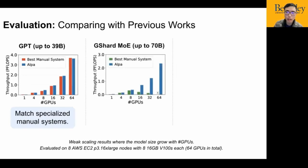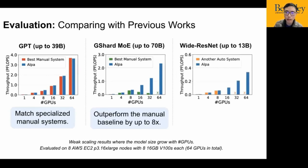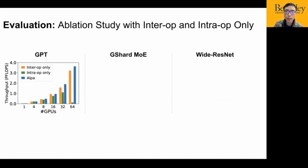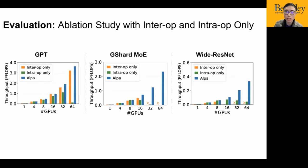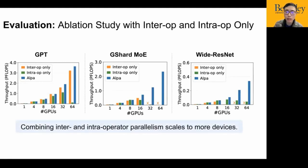And for GShard, MoE is a transformer with some additional mixture of expert layers. We test for models up to 70 billion parameters. We show that we can outperform the best manual baseline on GPU by up to 8 times on this AWS cluster with 64 GPUs. And for WideResNet, which is a significantly different model compared to transformer, and there is no existing manual model parallel strategy for it. We show that we can also generalize to these unseen models without manual plan, while other baselines fail to scale. We also used ALPA to perform inter-operator or intra-operator only as a baseline, and perform this ablation study. We show that combining inter- and intra-operator parallelism is necessary and can help the system to scale to more devices.